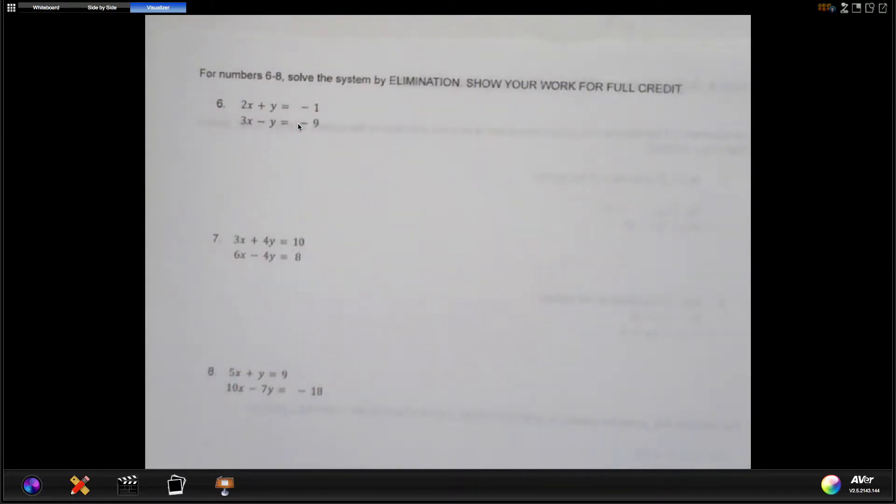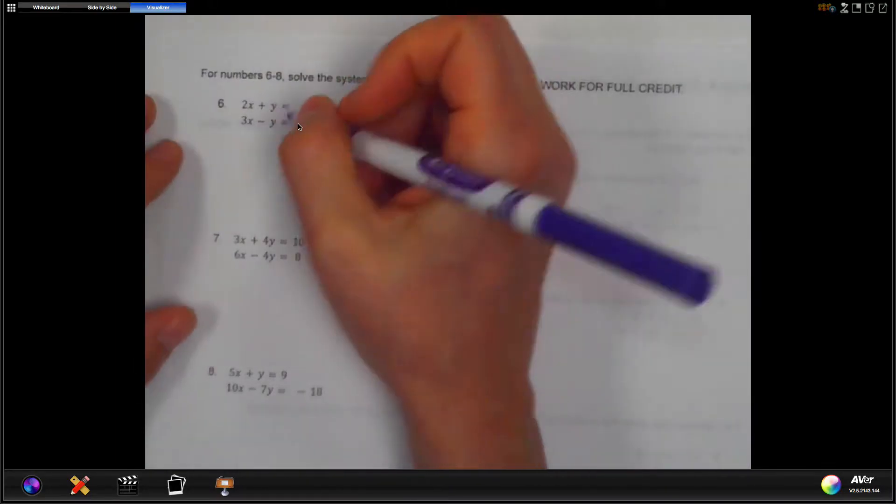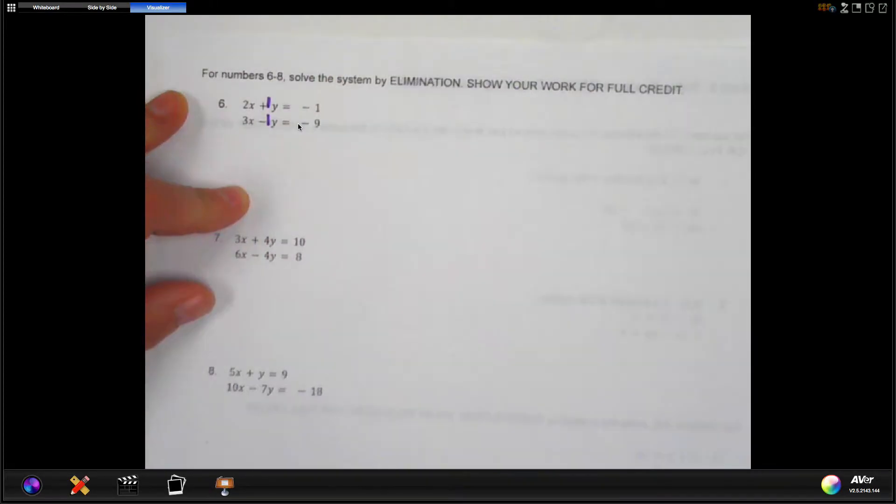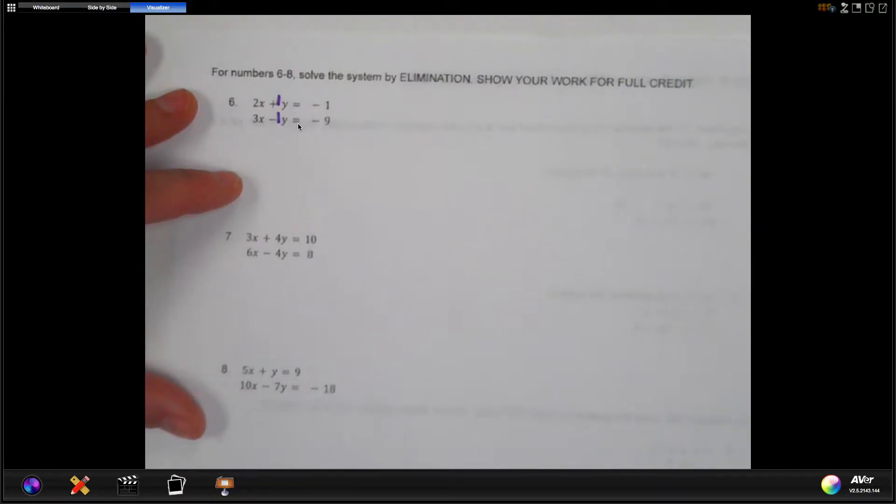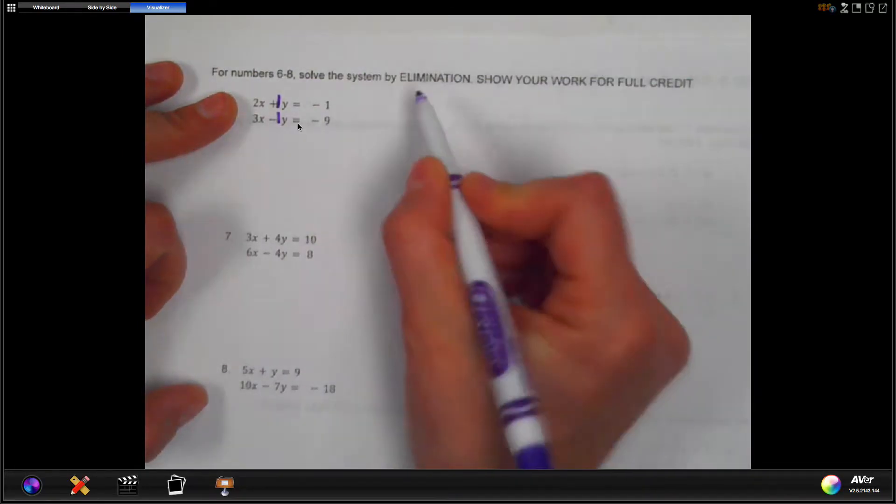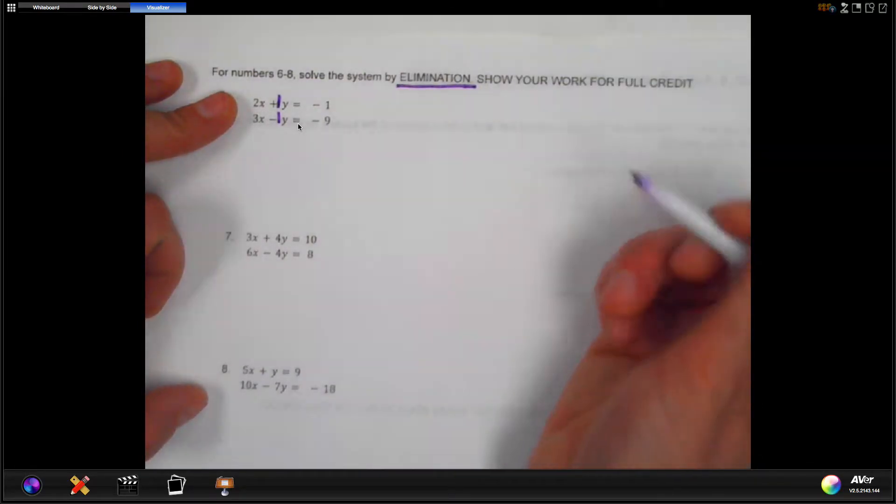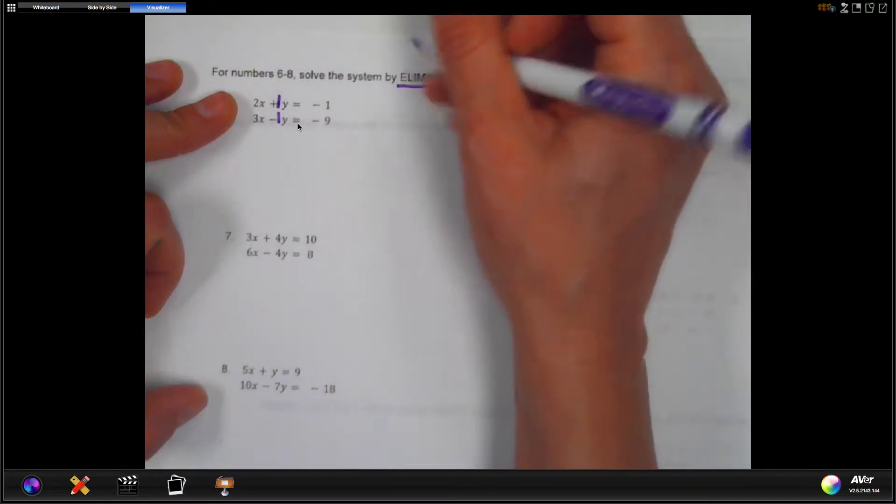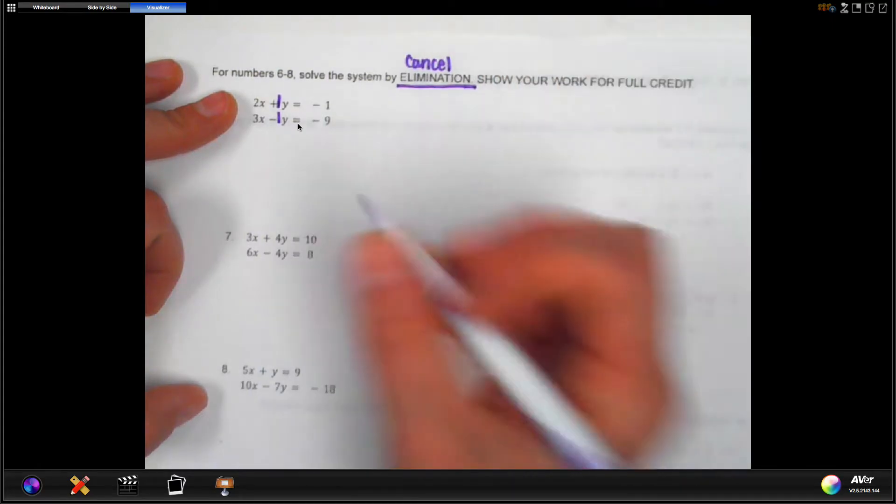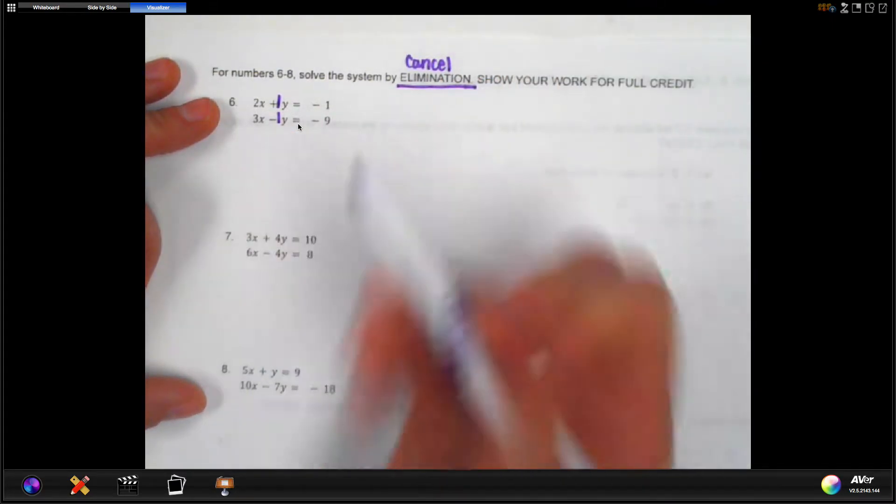So number six, let me remind you that it might help you to put missing ones in if you notice them. So there's a one missing in front of each of the y's. And right away when you put those ones in, you might notice that you have a positive one y here and a negative one y here. Okay, so elimination means, remember, that we are looking for one of them to cancel, exactly cancel, and equal zero. So positive one y and negative one y will do that.